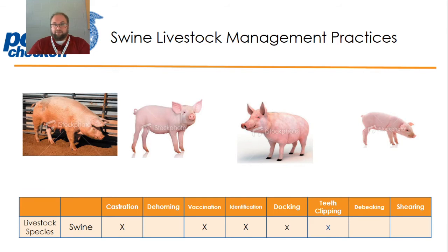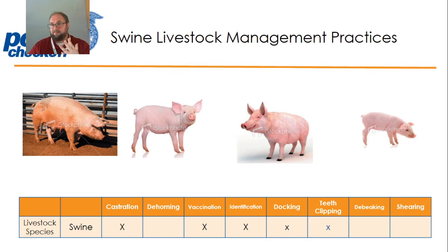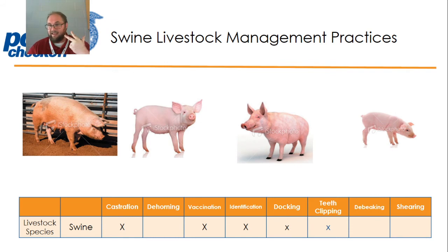Swine livestock management practices. With pigs, the livestock practices applied are castration. They don't get dehorned because they have no horns. We vaccinate, we identify, we dock their tail because pigs have a nice long curly tail when they're born, and we clip their needle teeth. So pigs are castrated, vaccinated, identified, their tail is docked, and their teeth are clipped — five things.